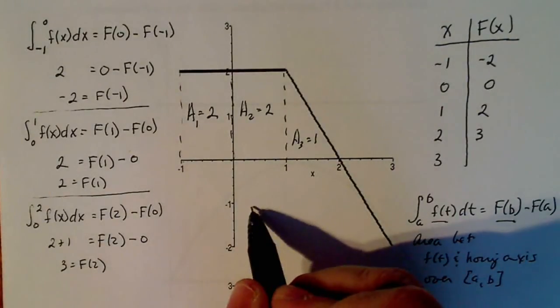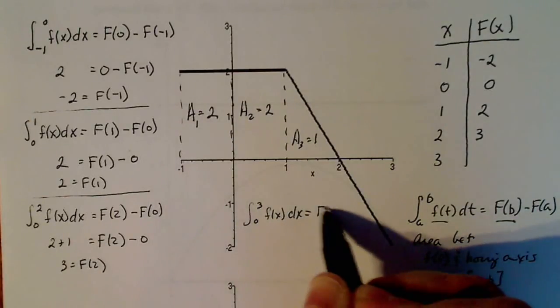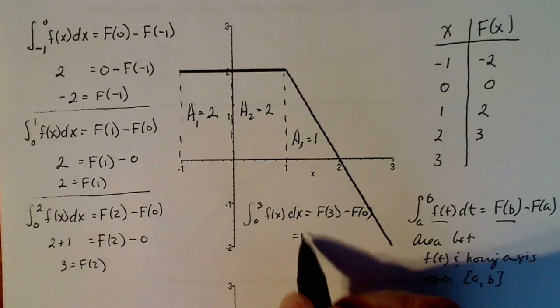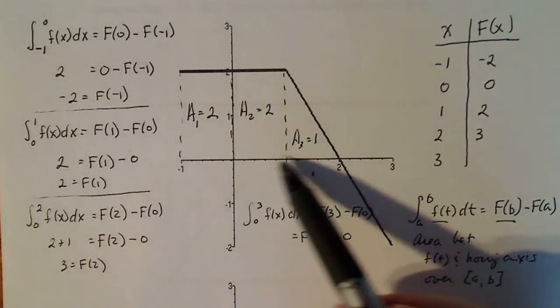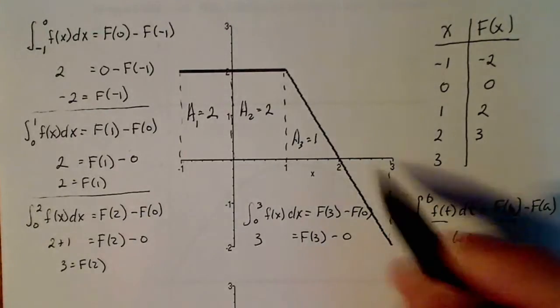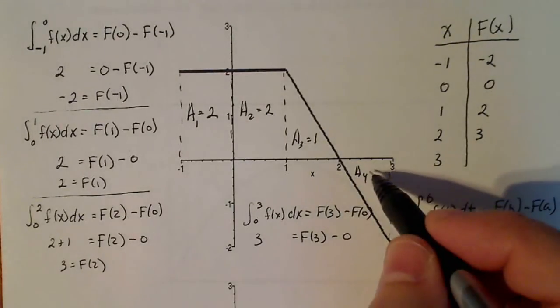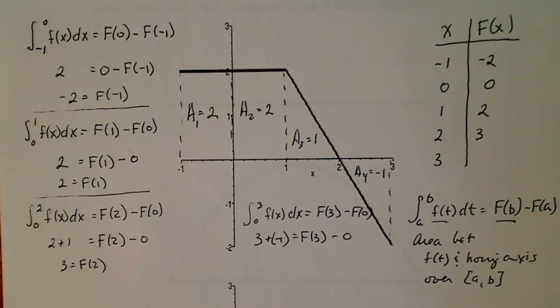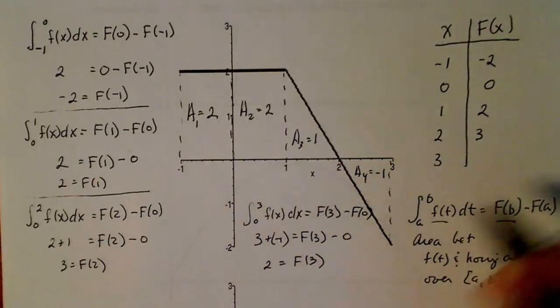And then the last one I'm going to do is from zero to three f of x dx. That's the last one I have to do. So it's going to be f of three minus f of zero. F of three is the unknown, f of zero is zero. The integral from zero to three, well, I know that this first part is three units, but this part right here, area sub four, that's the same shape as this. So it's going to have an area of one, but since it's below the axis, it will have an area of negative one. So it's going to be three plus a negative one for that total area there. So I have two equals f of three. So I put two here.